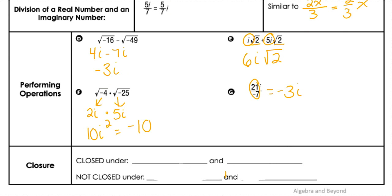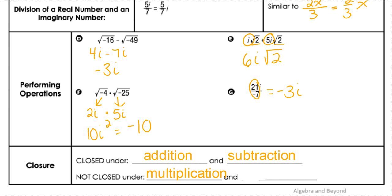When it comes to imaginary numbers, they are closed operations under addition and subtraction — meaning that when I add and subtract imaginaries, I get imaginary answers. But they are not closed under multiplication and division, because when we multiply two imaginaries, we sometimes get a real answer.